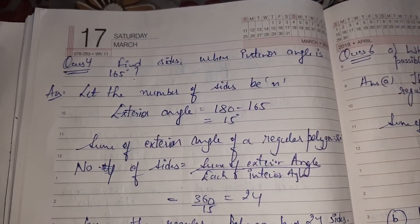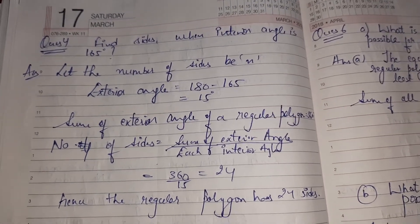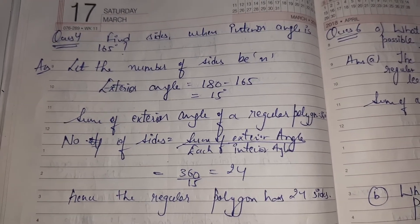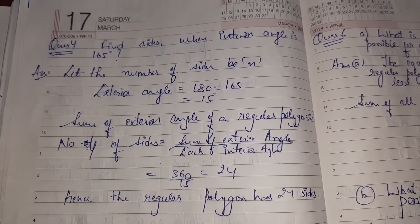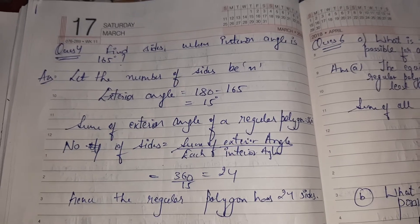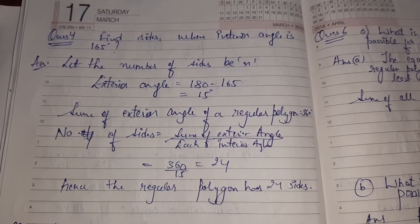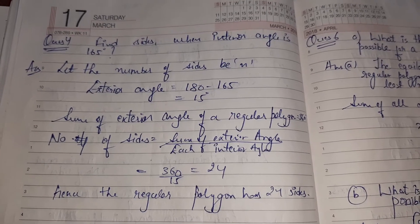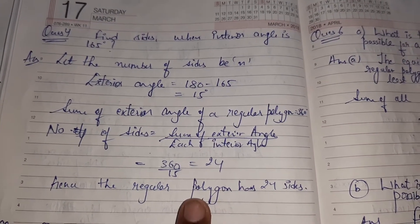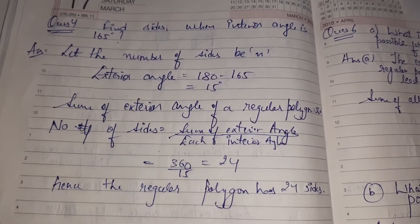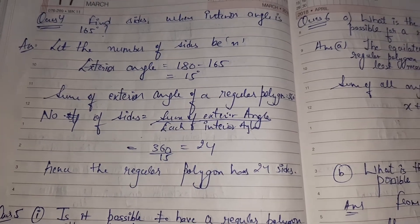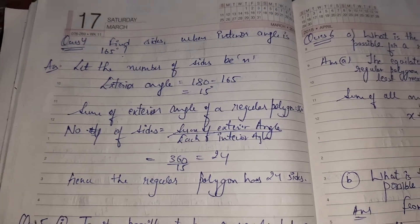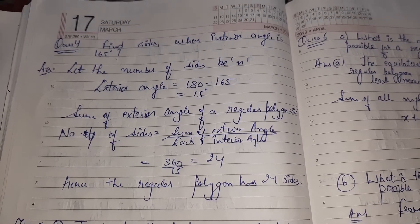See question number 4: Find the number of sides where the interior angle is 165 degrees. They have given us an interior angle, so I subtract from 180: 180 minus 165 gives the exterior angle as 15 degrees. The number of sides equals sum of exterior angles upon each exterior angle: 360 divided by 15. So the number of sides is 24.